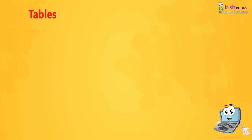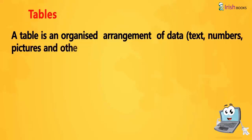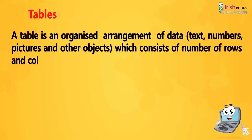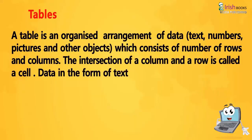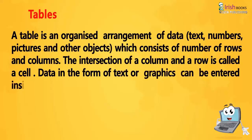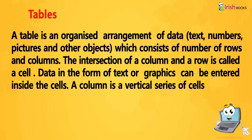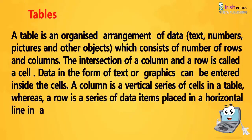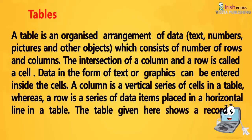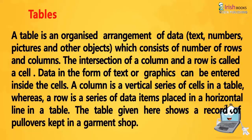Tables. A table is an organized arrangement of data, text, numbers, pictures and other objects, which consists of a number of rows and columns. The intersection of a column and a row is called a cell. Data in the form of text or graphics can be entered inside the cells. A column is a vertical series of cells in a table, whereas a row is a series of data items placed in a horizontal line in a table. The table shown here displays a record of pullovers kept in a garment shop.